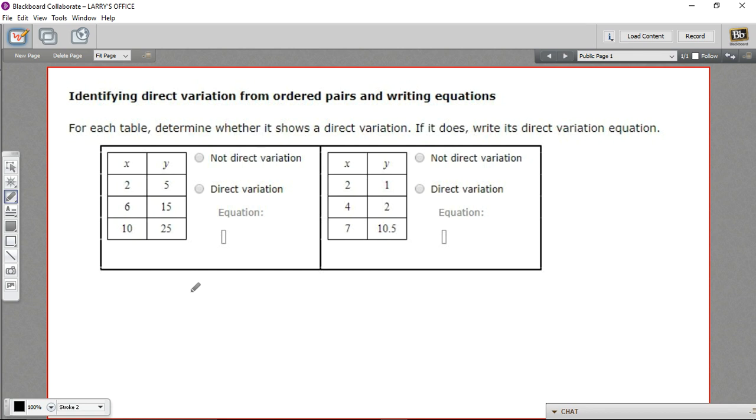The formula for direct variation: we say y varies directly with x. We write y equals some constant k times x. This constant always stays the same in direct variation. Another way to write this formula is to put y over x. What this means is that if you put y over x, you get the same constant every time.